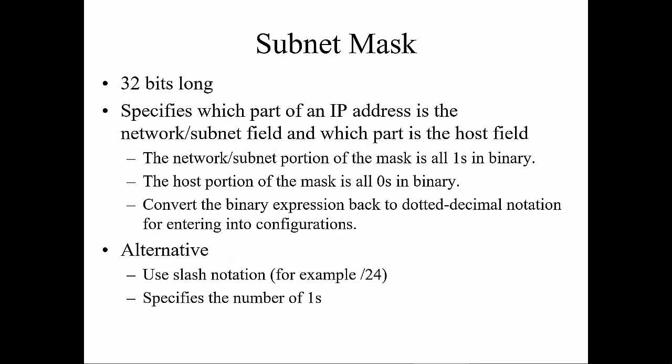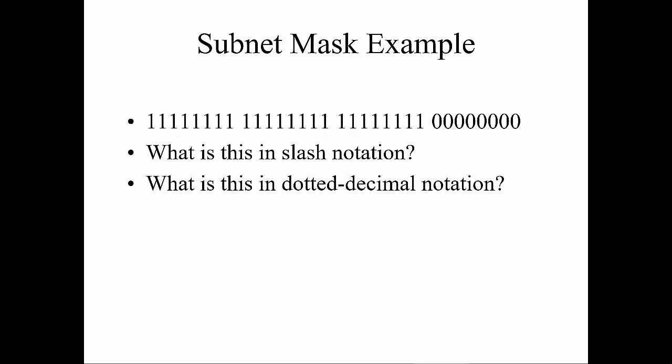Subnets, just like IP addresses, are 32 bits long. They specify which part of the address belongs to the network and which part belongs to the host — either in dotted decimal or slash notation for IPv4. Here it is broken down in binary: notice 8 bits, 8 bits, 8 bits, and 8 zeros. How many ones are there? There are 24 ones — so in slash notation, that'd be /24. In dotted decimal, it'd be 255.255.255.0.